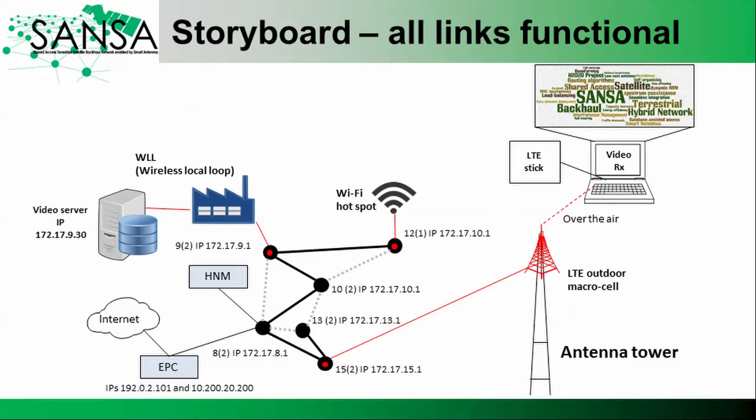The goal of the intelligent backhaul node is to detect and identify network problems such as a congested link or a link failure, and to notify the hybrid network manager about it. The role of the hybrid network manager is to propose a network topology that resolves these network problems and improves network capacity, latency, and so on. Both the intelligent backhaul node and hybrid network manager are realized as virtual machines running on the Linux operating system.